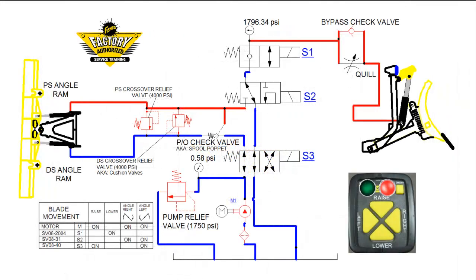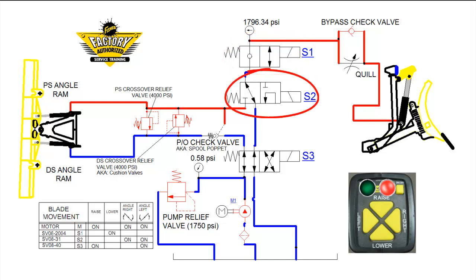There are many different hydraulic components that make up the Straight Blade Plow Hydraulic Circuit. There are three solenoid cartridge valves labeled S1, S2, and S3.